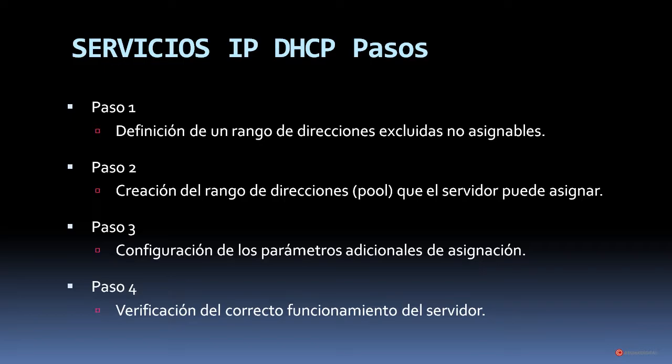Antes de revisar el procedimiento en el dispositivo, vamos a visualizar los pasos que vamos a tener que seguir para no confundirnos a la hora de realizar el procedimiento, aunque realmente es bastante sencillo, como vais a ver tanto en la parte teórica como en el laboratorio práctico. En el primer paso lo que hacemos es definir un rango de direcciones excluidas no asignables.